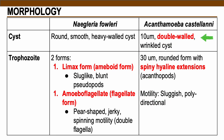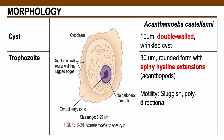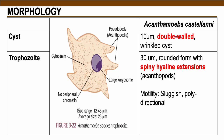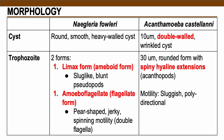For Acanthamoeba castellani, the cyst form is double-walled with a wrinkled outer wall, much like a fried egg or sunny-side-up appearance — one outer wall and one inner wall. For the trophozoite of Acanthamoeba, take note of the spiny hyaline extensions called acanthopodia — pseudopods that are pointy or attenuated. This is why it is called Acanthamoeba. Its motility is sluggish and polydirectional.